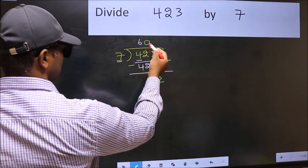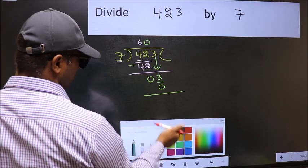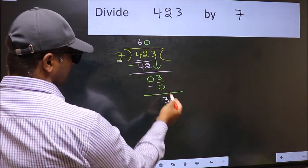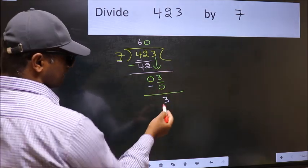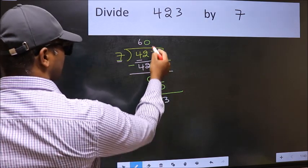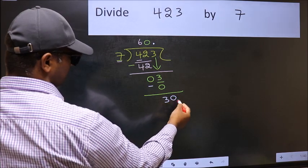So 7 into 0, 0. Now you should subtract. 3 minus 0, 3. Over here, we did not take any number down, and 3 is smaller than 7. So now you can put dot and take 0. So, 30.